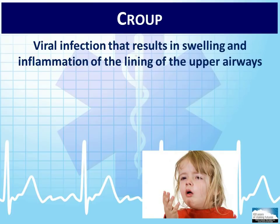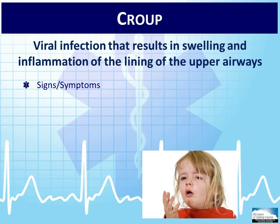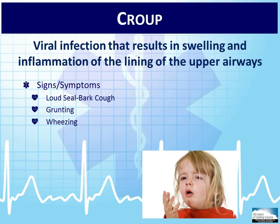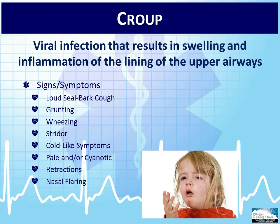Croup is a viral infection that results in swelling and inflammation of the lining in the upper airway structure. It occurs more commonly in the winter months. Signs and symptoms vary by the type of infection, but they are generally more evident either at night when the child is sleeping or when the child is upset or crying. One distinct sign that makes croup easier to identify is the loud cough that sounds like a seal bark. Other signs and symptoms may include grunting, wheezing, stridor, cold-like symptoms, pale cyanotic coloring, retractions, or nasal flaring. Grunting is a later sign produced by the body's efforts to open blocked airways. Wheezing is a high-pitched whistling sound created by the narrowing of the airway, heard predominantly during expiration because air becomes trapped. Stridor is a sign of an upper airway obstruction, and a child with croup may have both inspiratory and expiratory wheezing.